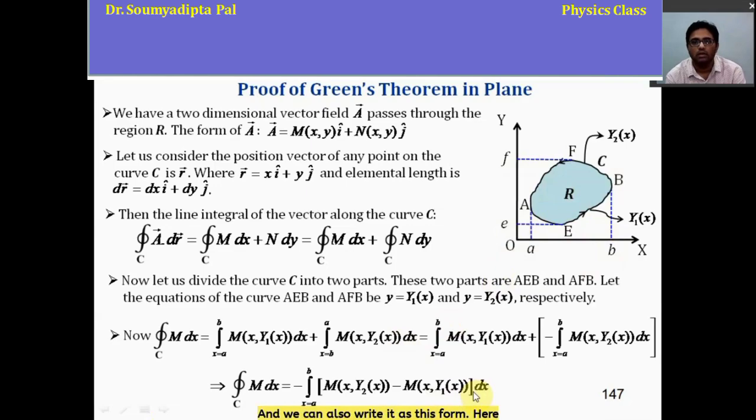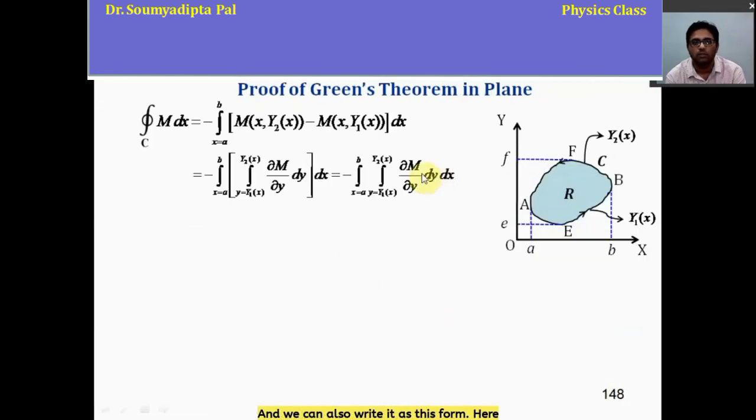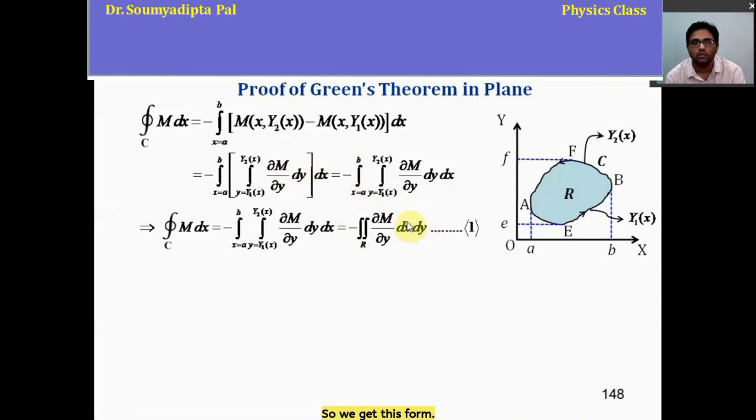Then we get this integration form. And we can also write it as this form. Here, this integrand is actually the integration of del m del y with respect to y, with limits y equal to y1 to y equal to y2. So, we get this form. And it is the double integration of del m del y over this region.